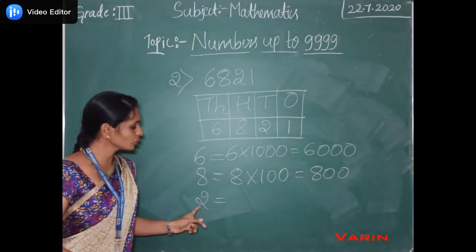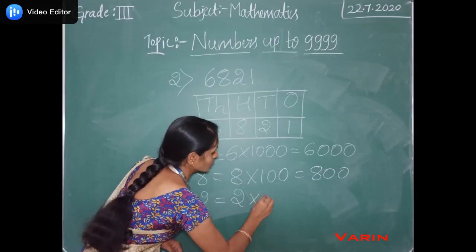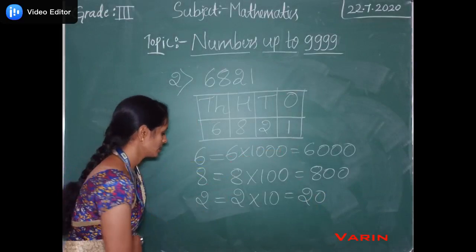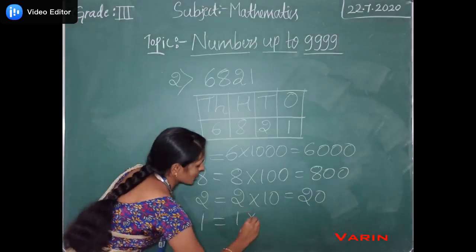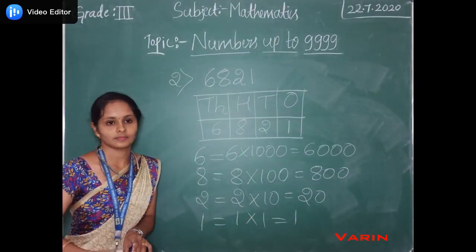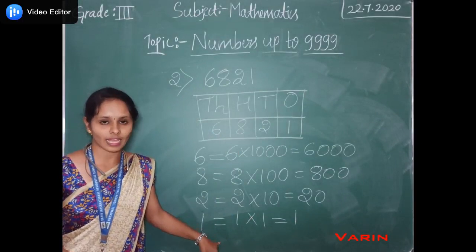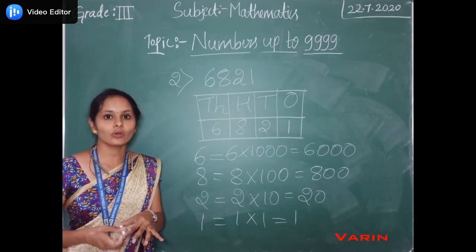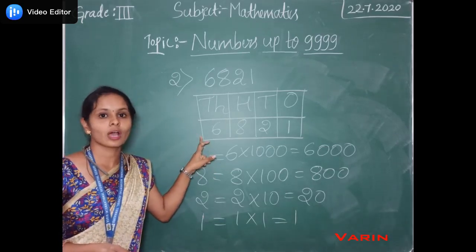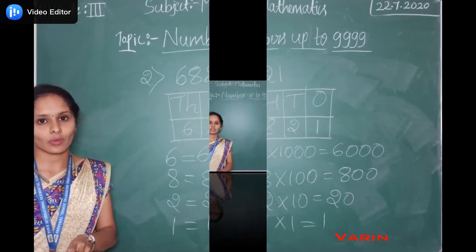2 is present in the tens place. So 2 into 10 it becomes 20. And 1 is present in the ones place. So 1 into 1 it becomes 1. This is about place value. For defining the place value, we use the place value chart. By the help of the place value chart, we can easily define the place value.